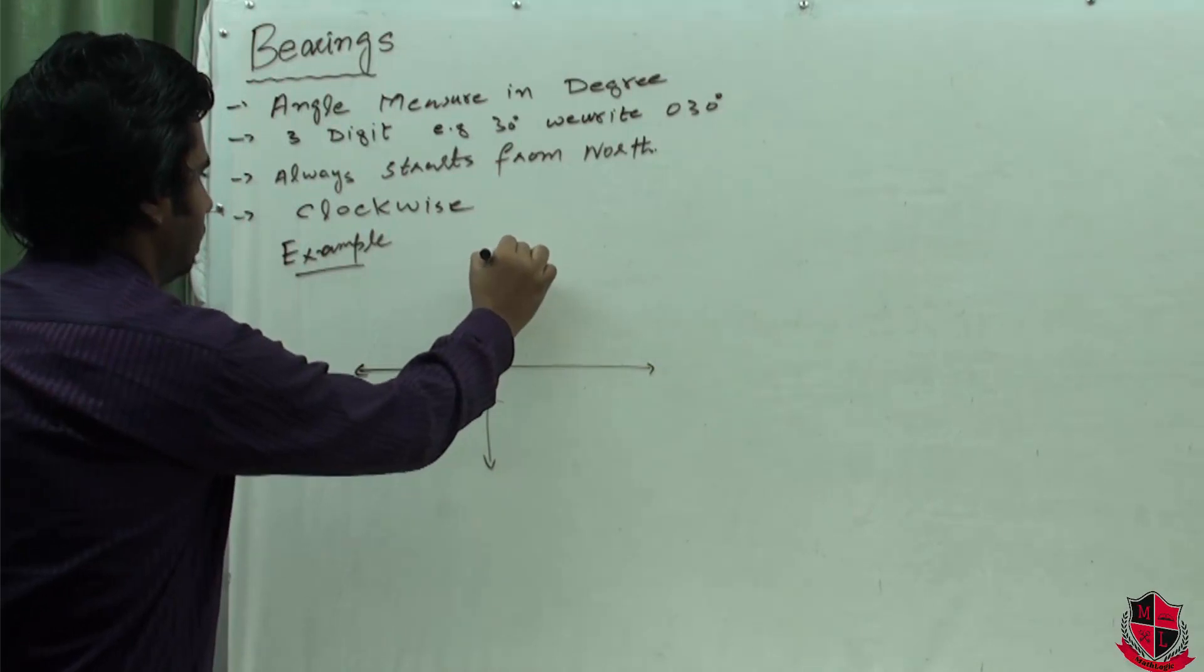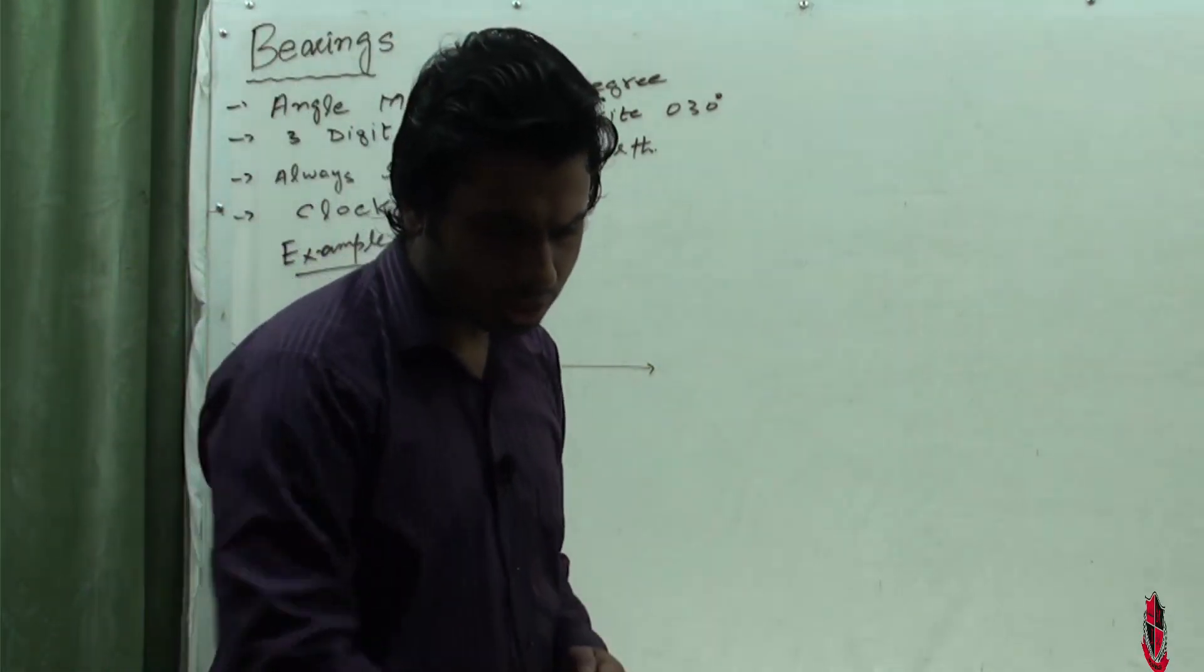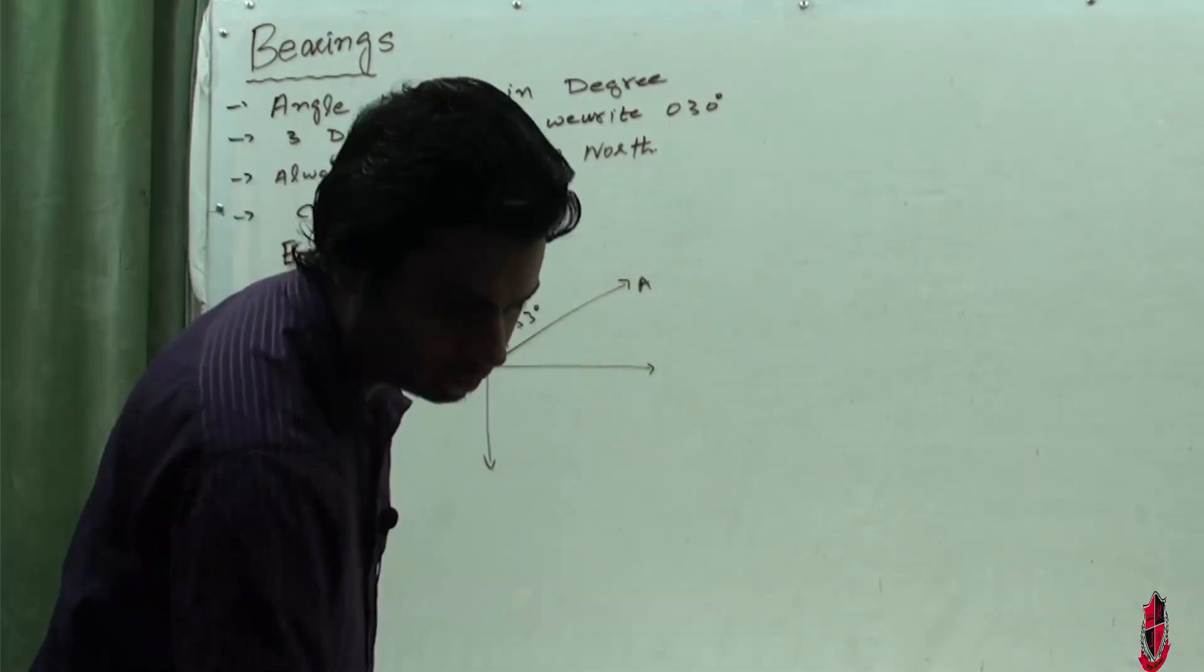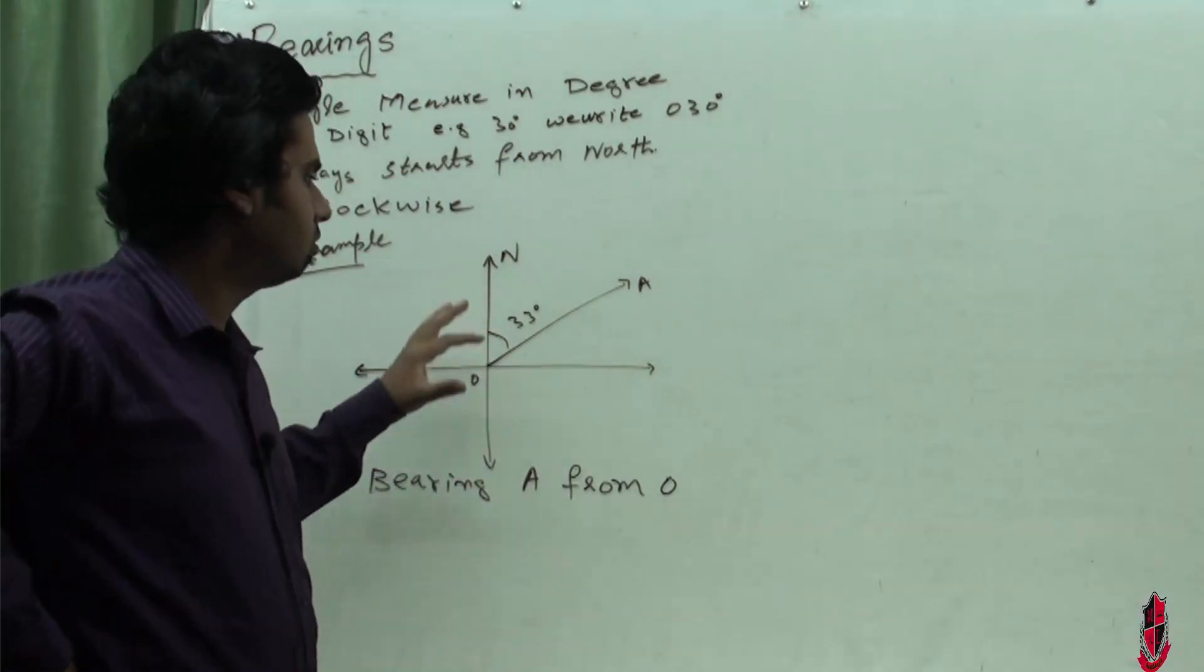We have a question. Here N is north, O is fixed, and we draw our diagram. Our objective is finding bearing A from O. This question covers fundamental concepts of bearings.